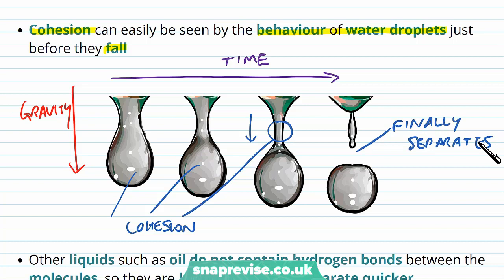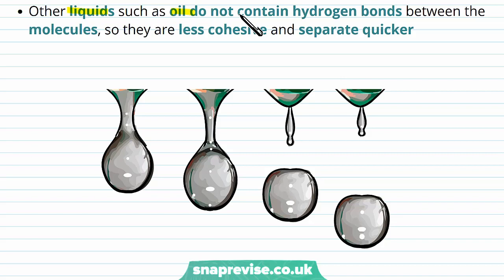You can compare this with other liquids, like for example oil, which is a liquid. Oil molecules don't have any of these hydrogen bonds between the molecules — they may have other intermolecular forces, but they don't have hydrogen bonds. So the cohesion is a lot less and they separate much faster. Again, with the progress of time and the pull of gravity, the cohesion is a lot less and so it separates much quicker.